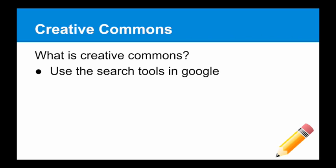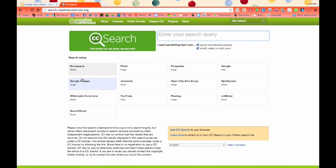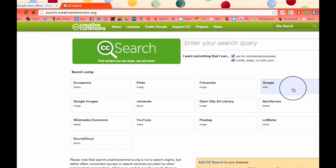Another thing I wanted to talk about is Creative Commons. Creative Commons is basically a place where you can go to use tools from the internet — anything from music to pictures and all sorts of stuff that's been labeled free to use. People have created these images, music files, and other documents that are free for anybody on the internet to use. There are different search tools in Google to allow you to search for things that are free to use, or you can go to search.creativecommons.org to find images and other projects that are free to use in anything you're working on.